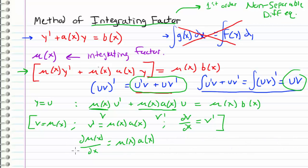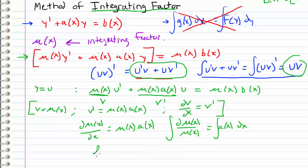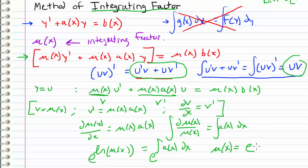This is itself a separable differential equation. Bringing mu of x to the left side and dx to the other gives d mu of x over mu of x equals a of x dx. Integrating both sides, the natural log of mu of x equals the integral of a of x dx. Taking the exponential of both sides, we obtain our integrating factor: mu of x equals e to the integral of a of x dx.